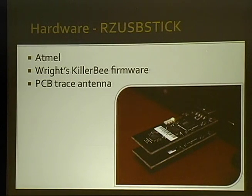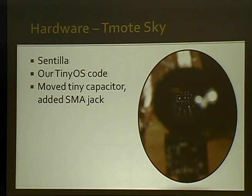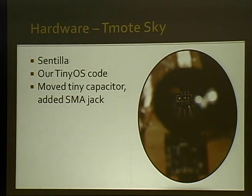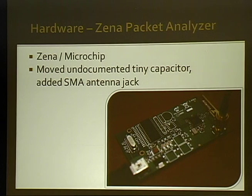Let's start with the hardware needed to work with this. First is the RZUSB stick — you see two of them here. This is what Josh originally supported in KillerBee, but the hardware is limited in that it has a printed circuit board antenna, so your range and antenna options are limited. The T-Mote Sky, by putting your own TinyOS code on it and moving a tiny capacitor and adding an SMA jack, lets you add directional antennas. Similarly for the Zener packet analyzer — you need to move a tiny undocumented capacitor. It has a closed framework, more useful for sniffing than injection.